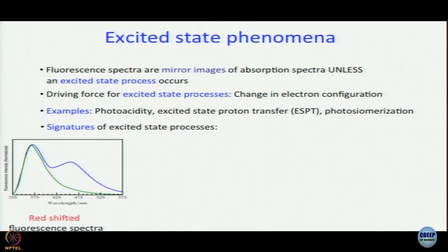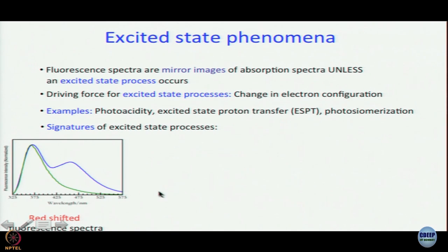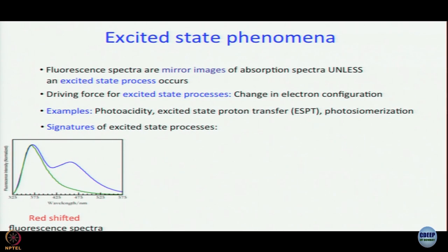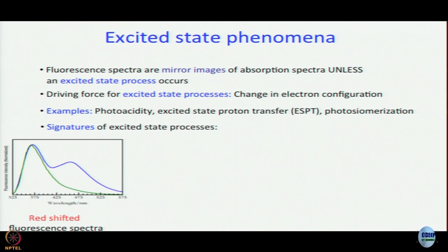What are the signatures of excited state processes? If you look at fluorescence spectra — this is actual spectra recorded in our lab many years ago — the x-axis is in wavelength from 325 nm to 575 nm, with energy decreasing left to right. One spectrum is the mirror image spectrum, characteristic of the locally excited state, and the red-shifted band is characteristic of the nascent state — the state formed as a result of the excited state reaction or process.